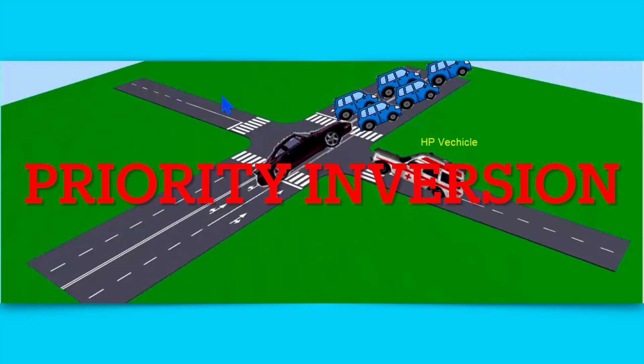This is called priority inversion, where a lower priority task is blocking the higher priority task because both tasks are sharing a common resource. The common resource here is this junction.